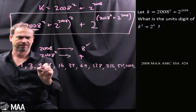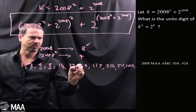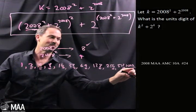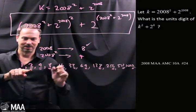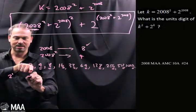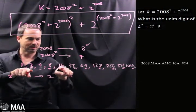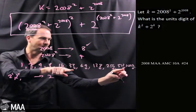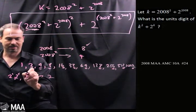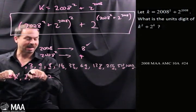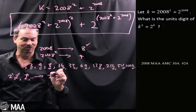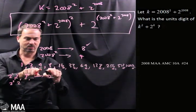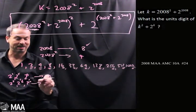Looking at the last digits: 2, 4, 8, 6, 2, 4, 8, 6, 2, 4. I'm seeing a pattern. So 2 to the 1 ends in a 2, and so does 2 to the 5th, and 2 to the 9th — every fourth one after 2 to the 1 ends in a 2. Similarly, 2 squared, 2 to the 6th, 2 to the 10th all end in a 4.